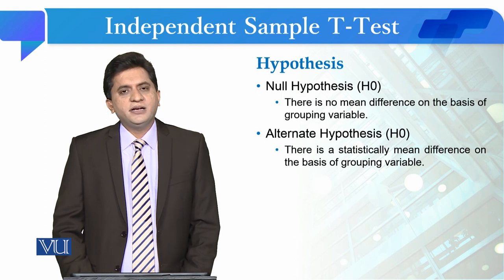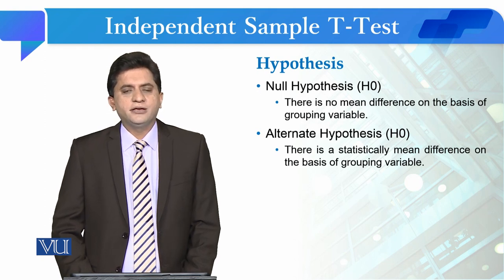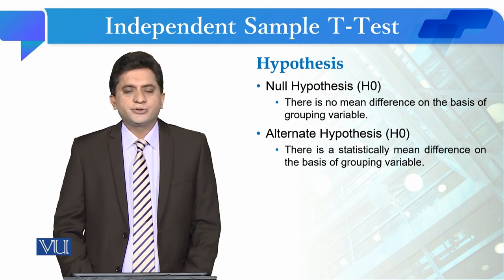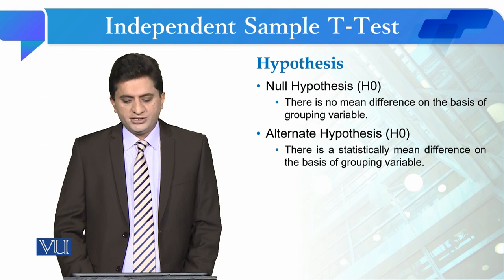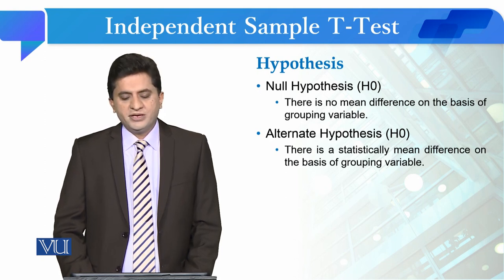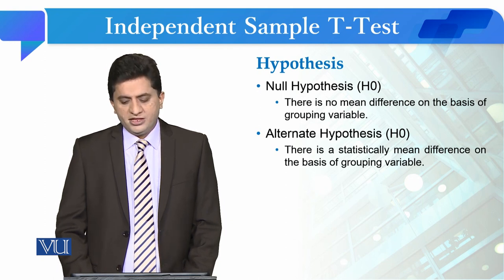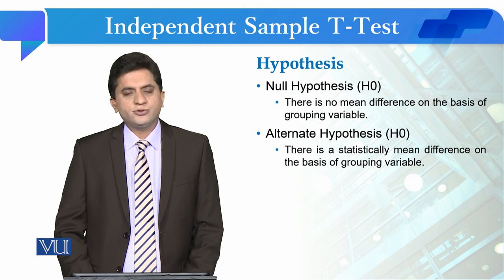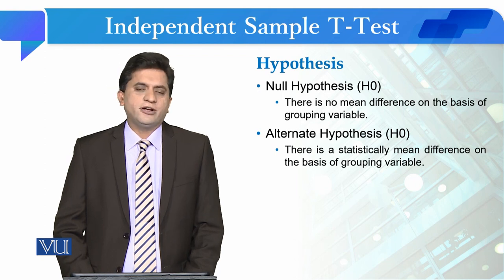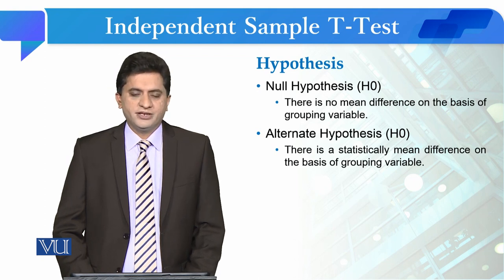Now if we talk about the hypothesis for the independent sample t-test, we write it as: the null hypothesis states there is no mean difference on the basis of the grouping variable, and the alternate hypothesis states there is a statistically significant mean difference on the basis of the grouping variable.